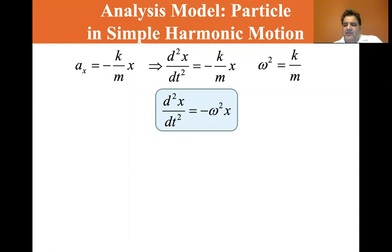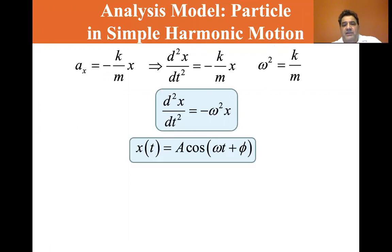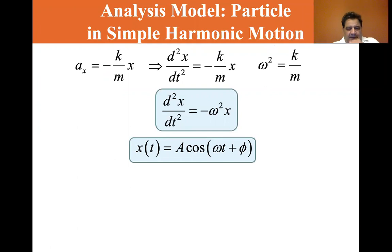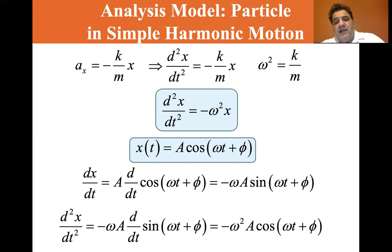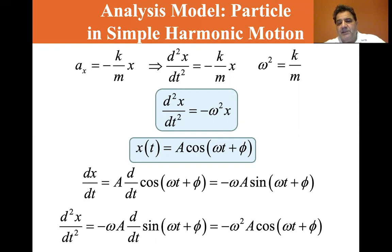We're looking for a differential equation that satisfies this, and the one that does is x(t) = A cosine(ωt + φ). Taking the first derivative, dx/dt is velocity, which equals A · d/dt of cosine(ωt + φ), giving us minus omega A sine(ωt + φ).